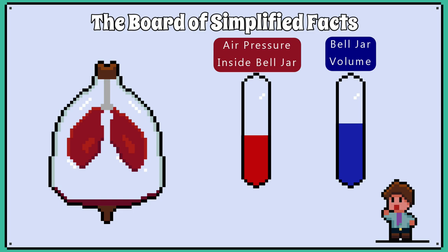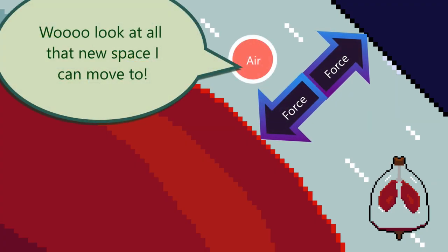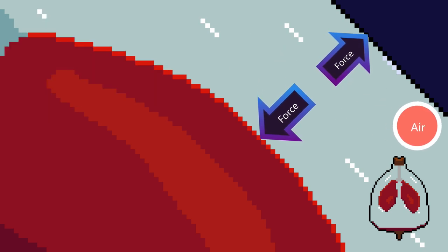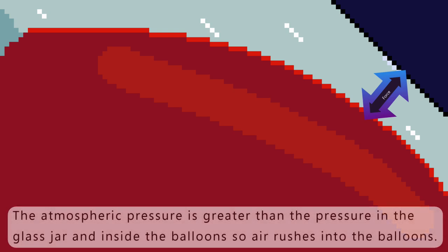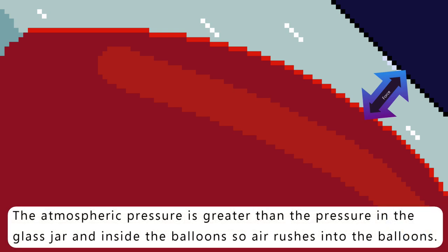When we pull down on the rubber sheet, mimicking the diaphragm contracting and flattening, we increase the volume of the bell jar cavity and decrease the pressure. The air particles have more space to move around, so they exert less force on the outside of the balloons. The atmospheric pressure is greater than the pressure in the glass jar and inside the balloons, so air rushes into the balloons.